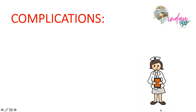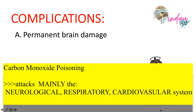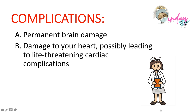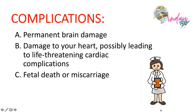There are many complications of carbon monoxide poisoning; the top ones are: permanent brain damage, because decreased oxygenation in red blood cells means brain cells also suffer; damage to the heart, possibly leading to life-threatening cardiac complications since blood circulates to the heart; fetal death or miscarriage; and lastly, death — the worst possible outcome.